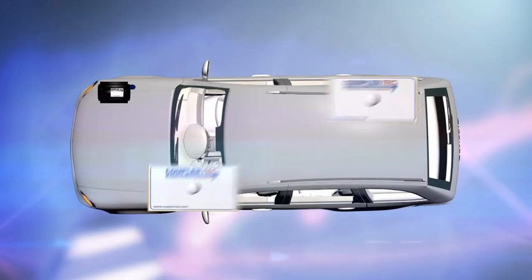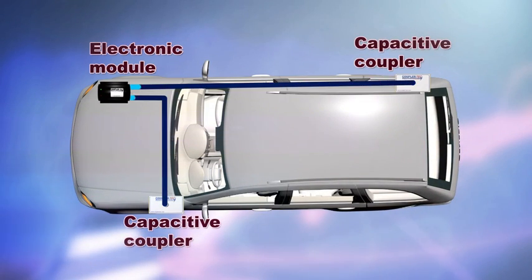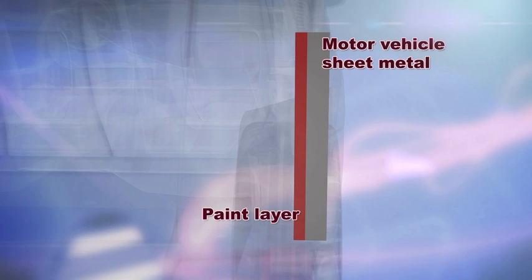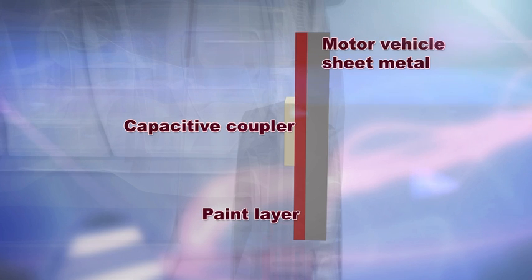The voltage and frequency created by the module is then transferred to the second component which is our capacitive coupler. The capacitive coupler is a conductive plate which is affixed directly onto the painted surface of the structure or motor vehicle using a high bond adhesive.